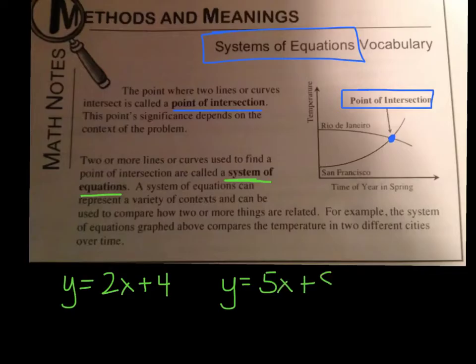Now, a system of equations is when you have two equations, and they can represent a variety of different things. So you might have these two equations: y equals 2x plus 4, y equals 5x plus 8. You might have two equations. And the solution to those two systems of equations is where those lines cross, or that point of intersection. In this situation up here, this would be the solution to these two systems of equations, that point up there - it's the point of intersection.